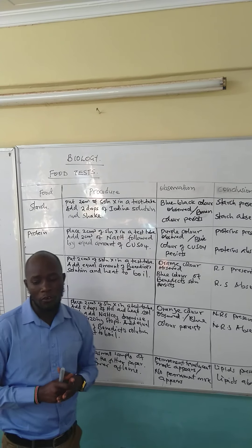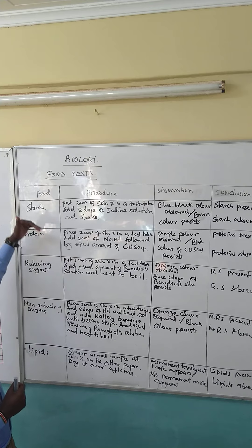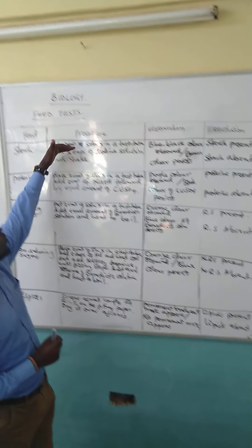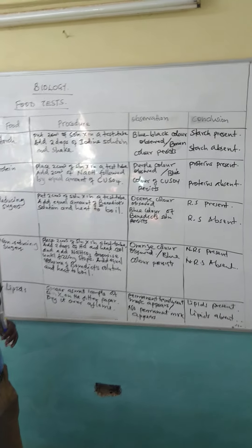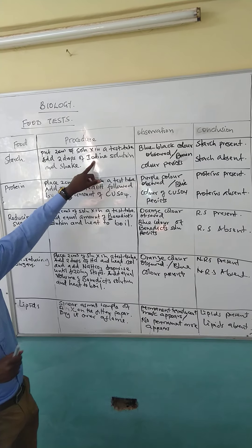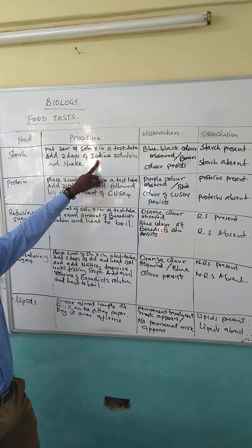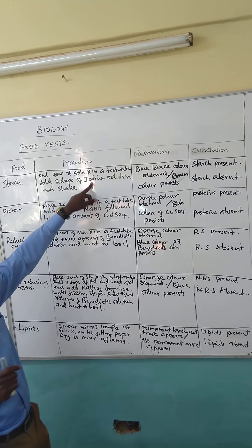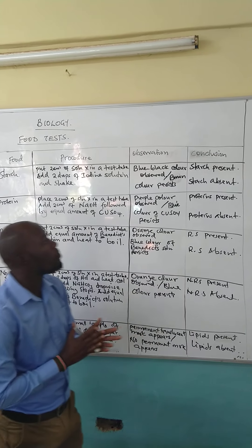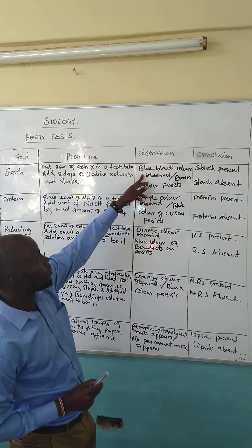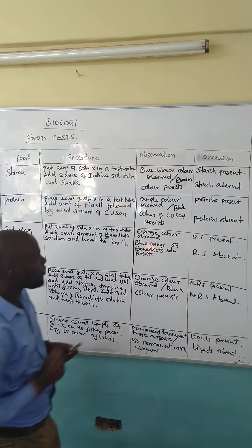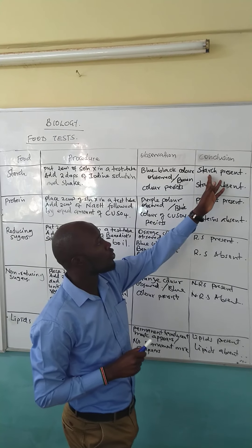Assuming we have been given solution X and we want to test for starch — this is where we always make mistakes. You put two cubic centimeters of solution X in a test tube. Then after putting those cubic centimeters, you add two drops of iodine solution. We don't talk about 'add iodine' — we have iodine solid, so we add iodine solution, and then you shake. When you observe, the solution changes to a blue-black color. Give us the observation: blue-black color observed. If a blue-black color is observed, then your conclusion would be starch present.